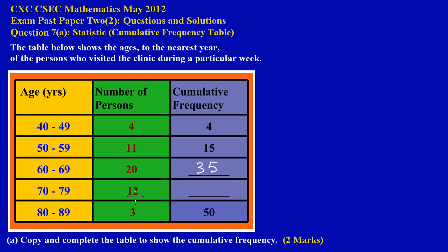Next, I add 12 to 35, which gives me 47. And you can verify the trend holds because adding the final value of 3 to 47 gives 50, which matches the total. That's how easy it is to fill out the cumulative frequency table. Feel free to subscribe or ask a question if you're still not sure, and I'll get back to you as soon as possible.